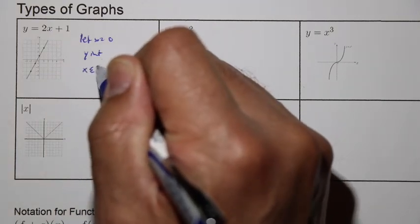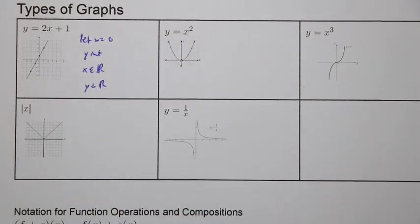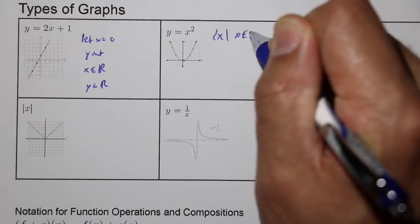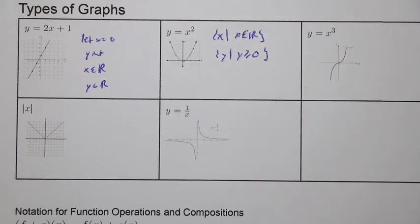Right here, you can see that x can be anything here, right? Y can be anything in this linear graph. In this one, we have x such that x can be anything, but here y is such that y could be greater than or equal to zero.